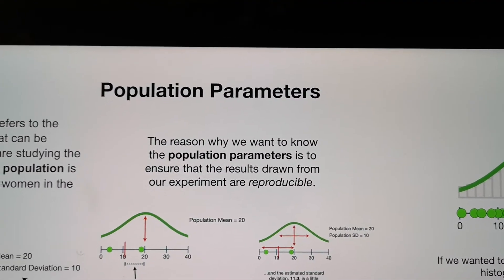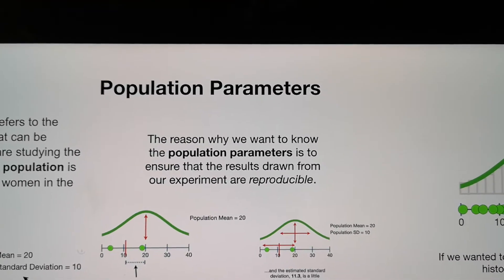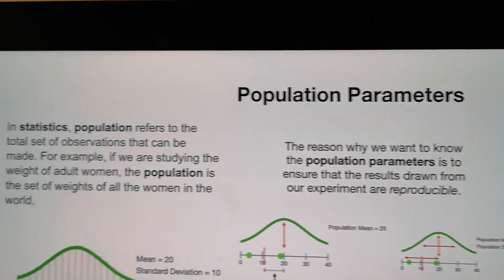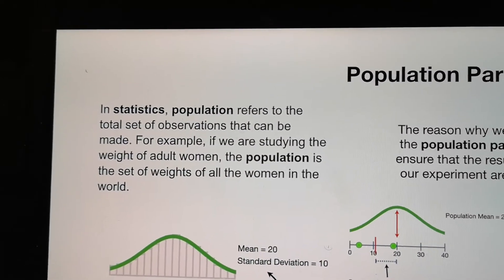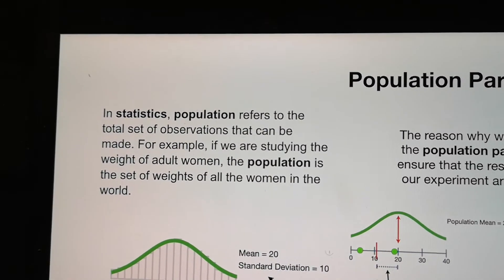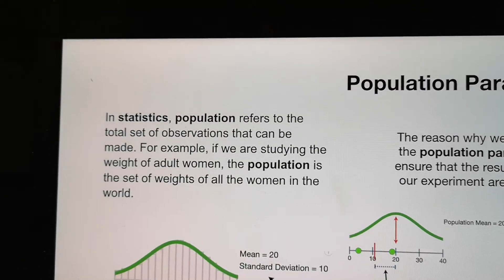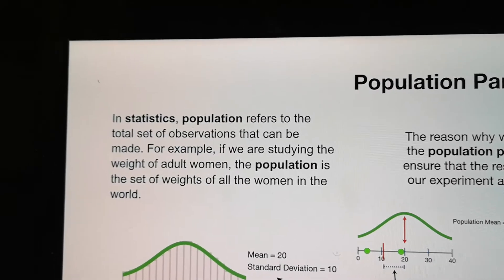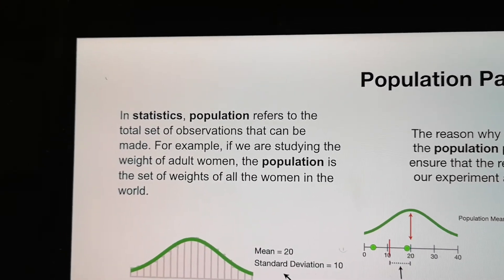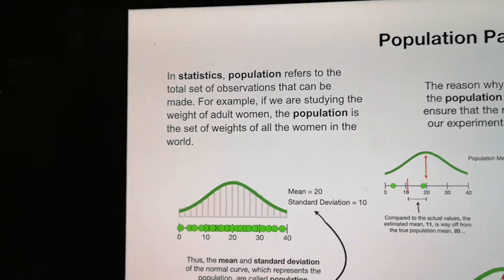For population, it's different than how many people in a city or in a country. In statistics, population refers to the total set of observations that can be made. For example, if we study the weight of adult women, the population is a set of weight of all the women in the world.